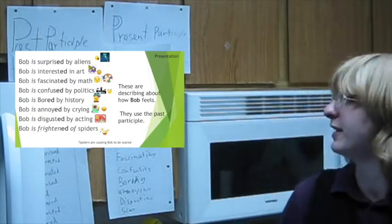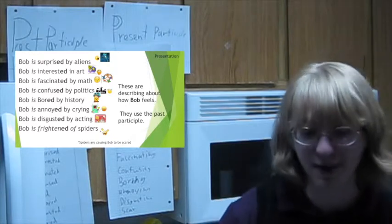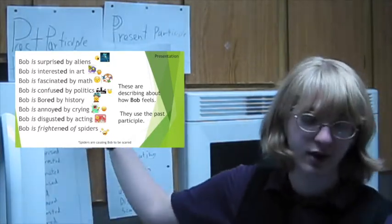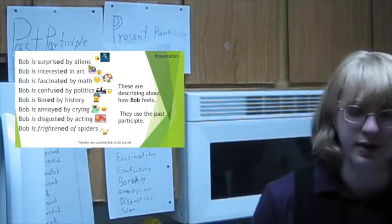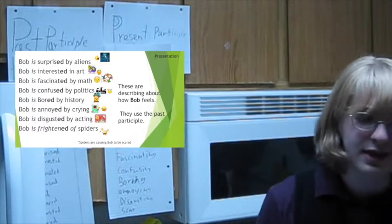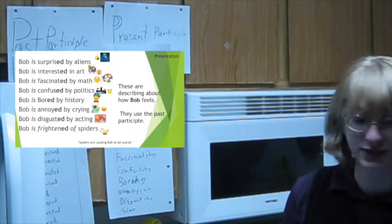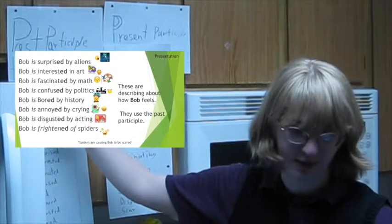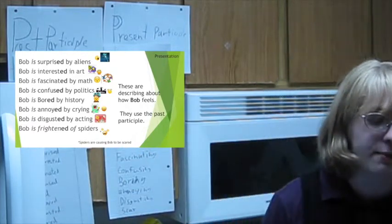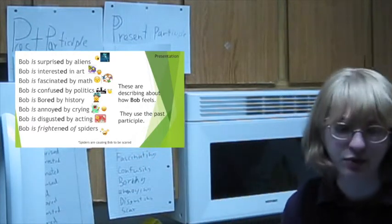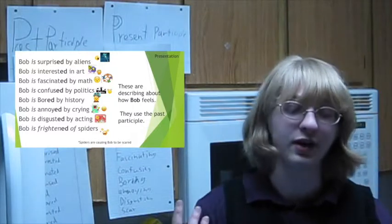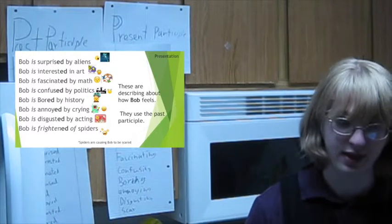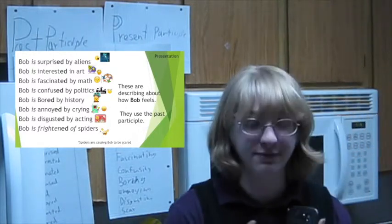So some of the examples that you guys came up during our last writing of stuff on the columns was Bob is interested in art. Interested, edie. That's a past participle. Or Bob is annoyed by crying. That's another annoyed with the past participle. These are all sentences that are describing how Bob feels.